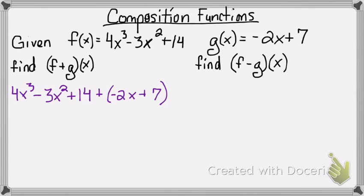So since there are no like terms with 4x cubed, I'll just bring it on down. No like terms with negative 3x squared, I'll bring it straight down.